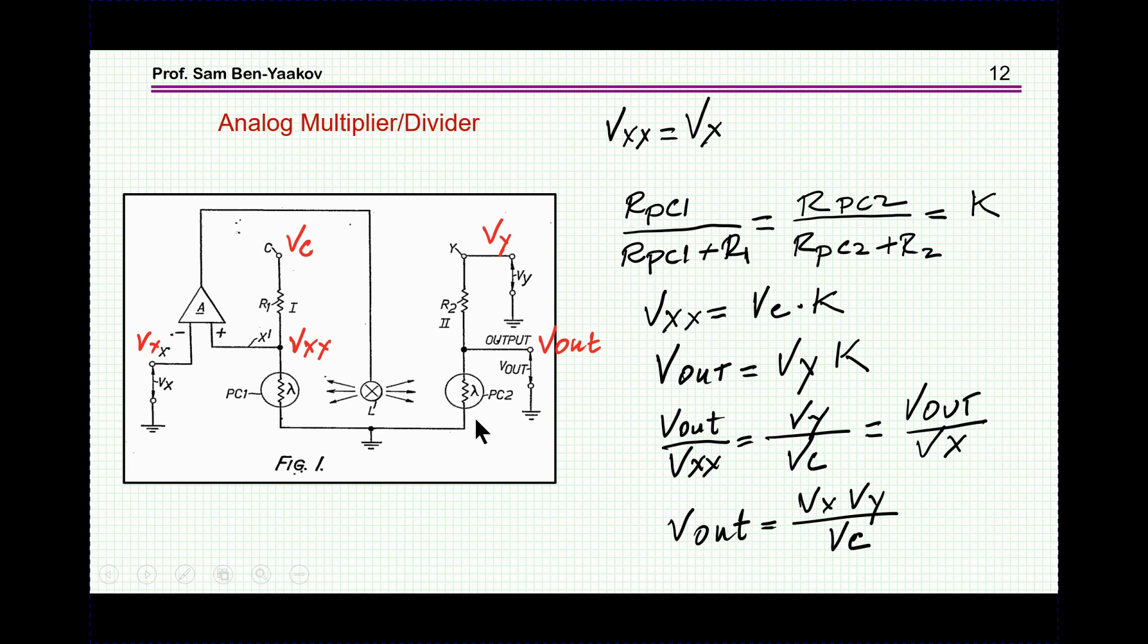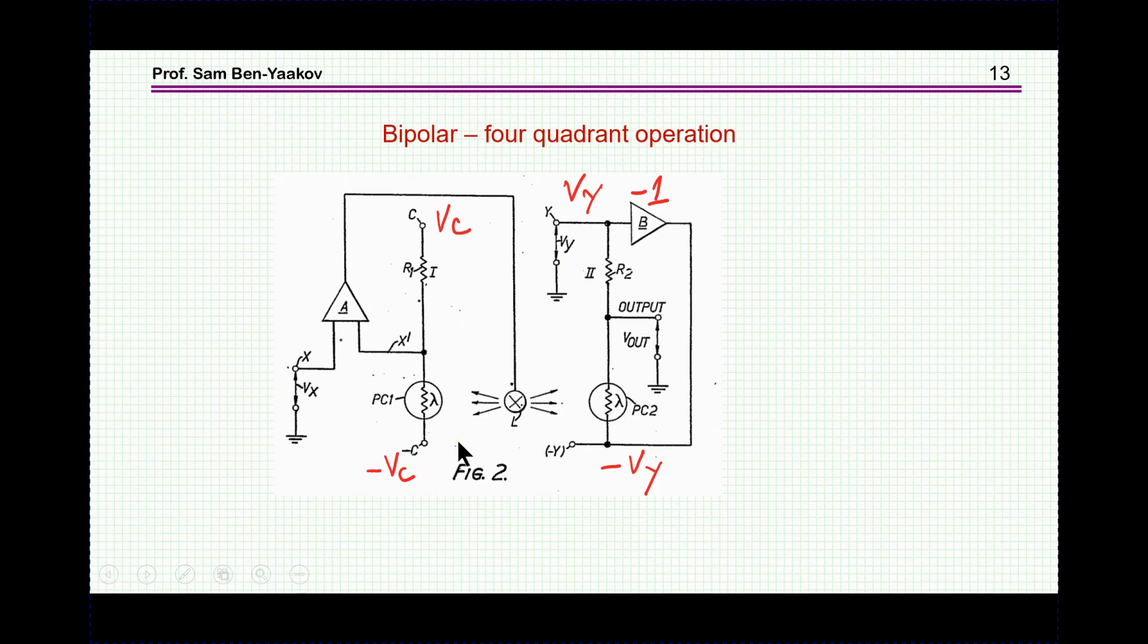In this configuration, all the voltages have to be positive, but there is another version here. And in this case, what has to be done is first of all to have a bipolar source here or a drive. And then Vy is then multiplied by minus one to generate another voltage which is the reflection of this voltage minus sign. And it can be shown that in this case you get the same expression, but it's bipolar, that you get a four-quadrant operation for all the polarities.